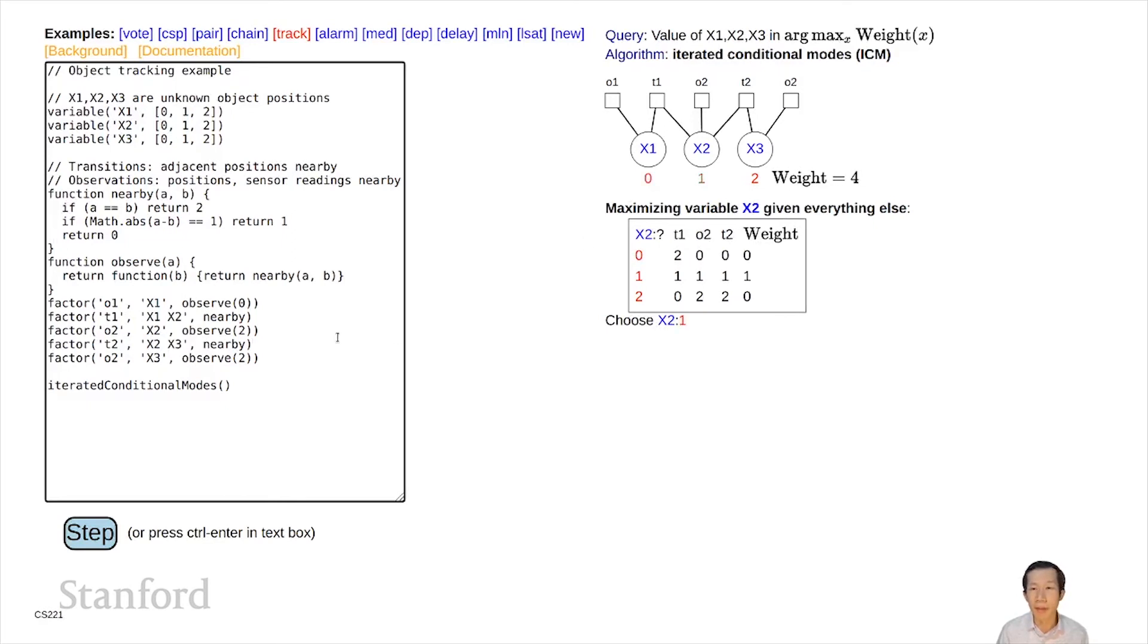Now let me step. I'm looking at x2, can I change anything? Nope. And what about here? x3 is assigned 2. What can I do? I compute the weights. And here, I am choosing x3 to be 1. So I change that assignment. And now I go back to x1 and iterate.